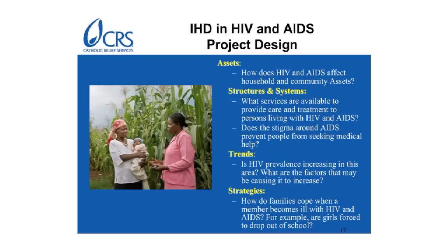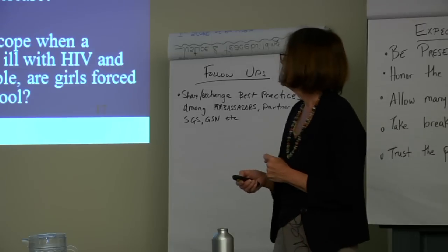Regarding structures and systems, we need to know where, for example, the critical areas of stigma lie and with whom within those communities. We need to begin to ask very critical questions around that. What are the trends — is it increasing, is it on the upscale, is it coming back down? What are the kinds of trends around factors that cause them in terms of HIV? And then really, what kind of strategy do we propose to use within this framework to respond to that?